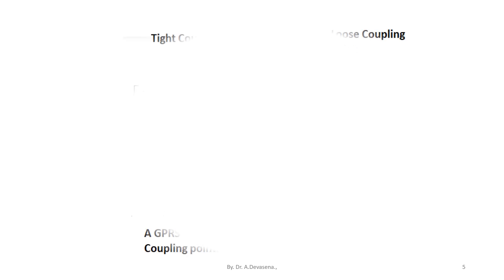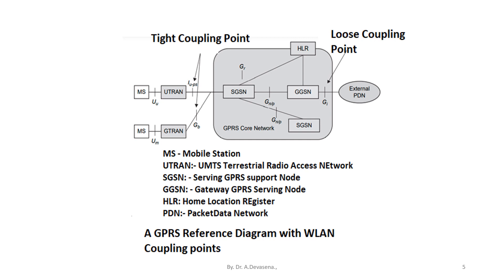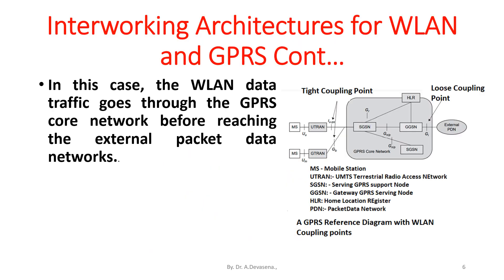A GPRS reference diagram with the WLAN coupling points is indicated in this diagram. MS represents the Mobile Station, UTRAN represents the UMTS Terrestrial Radio Access Network, SGSN represents the Serving GPRS Support Node, GGSN represents the Gateway GPRS Support Node, HLR represents the Home Location Register, and PDN represents the Packet Data Network. In this case, the WLAN data traffic goes through the GPRS core network before reaching the external packet data networks.